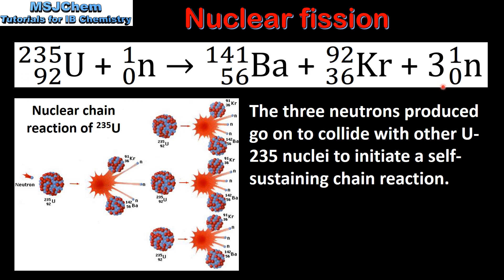In the nuclear equation we can see that three neutrons are produced. The three neutrons produced go on to collide with other uranium-235 nuclei to initiate a self-sustaining chain reaction.